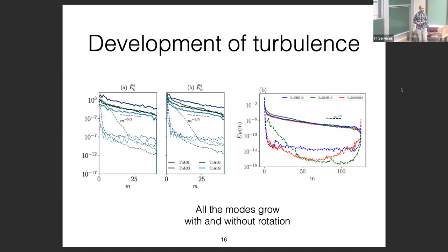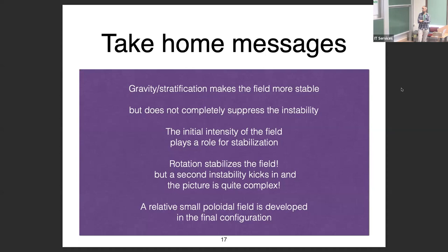Take-home messages from this first part: gravity can make the field more stable, although we do not see complete stabilization; the initial field intensity plays a role; and we believe rotation really stabilizes the Tayler instability beyond a certain threshold. Whenever the field goes unstable, a small poloidal field develops in the final configuration that can then remain stable for long times.